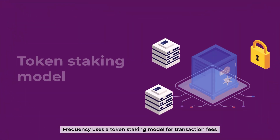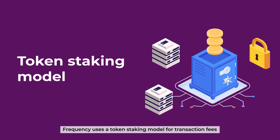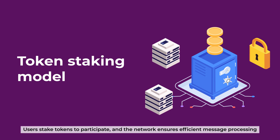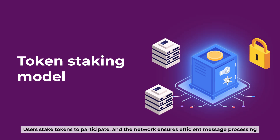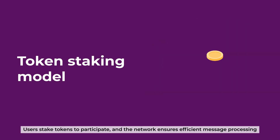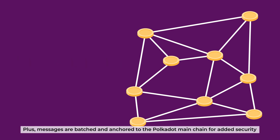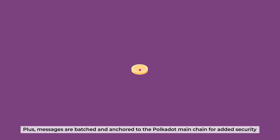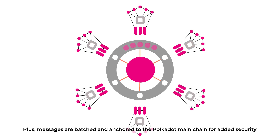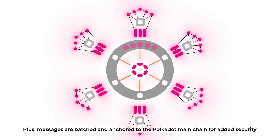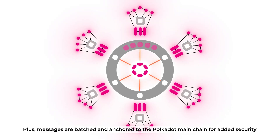Frequency uses a token staking model for transaction fees. Users stake tokens to participate, and the network ensures efficient message processing. Plus, messages are batched and anchored to the Polkadot main chain for added security.